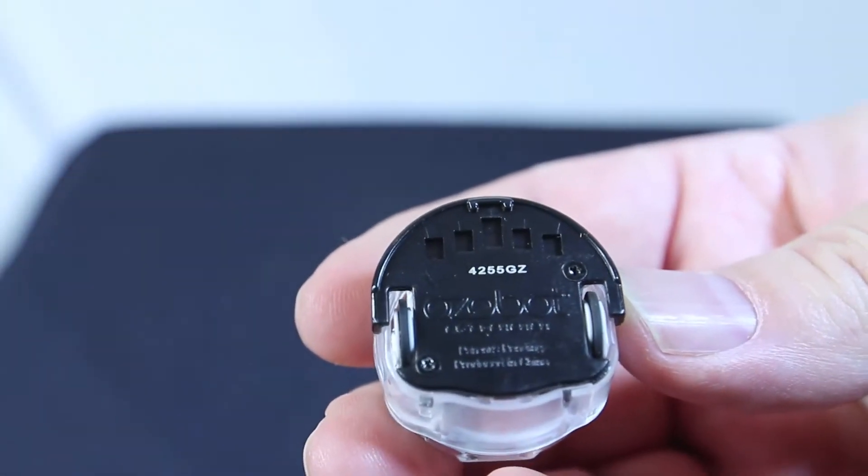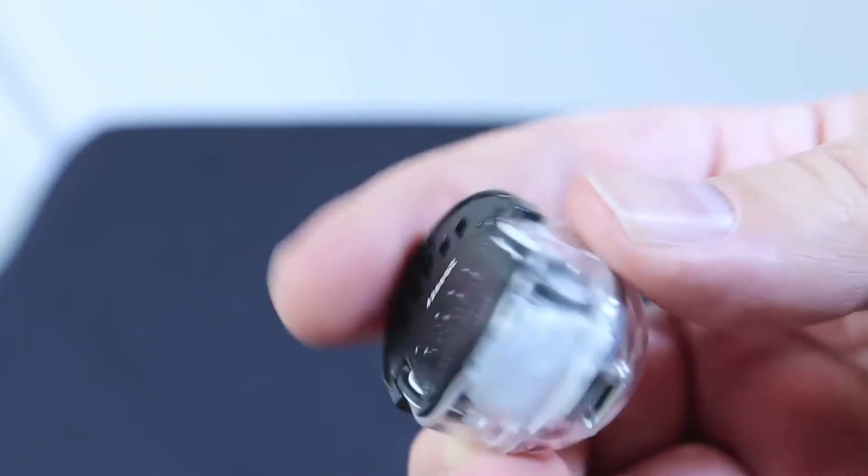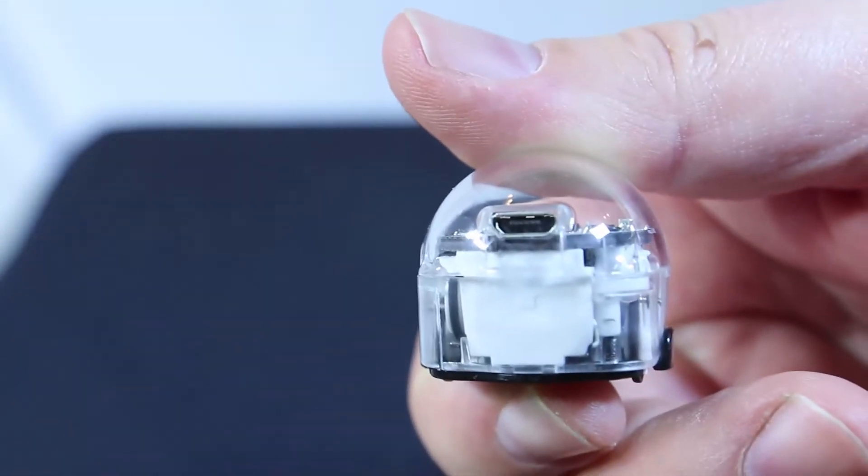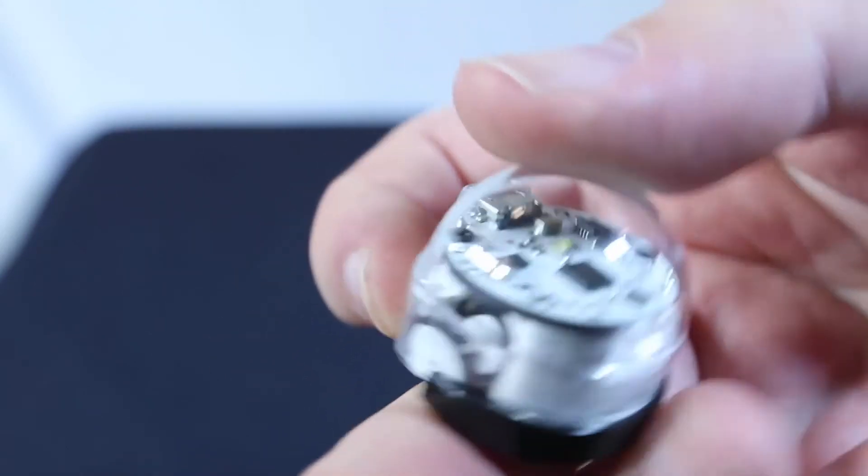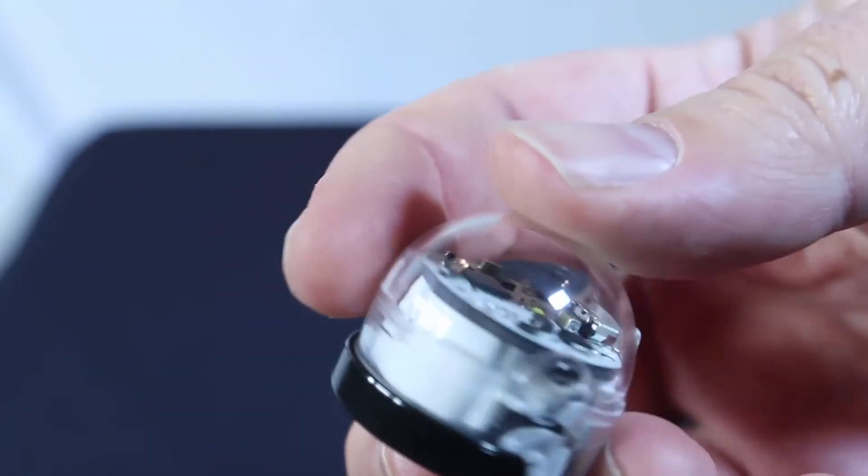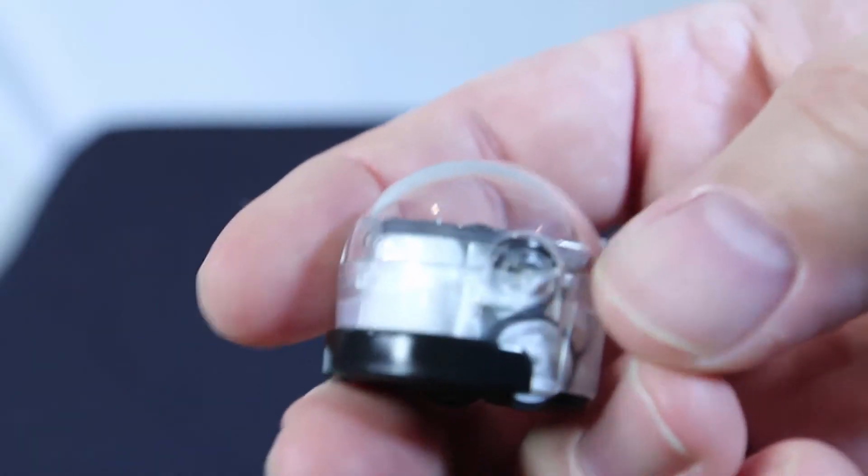You've got your charging port here in the back. You can see the wheels and gears inside. There's a power button right on the side alongside one of the wheels.